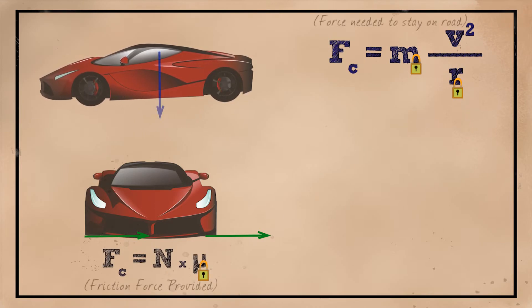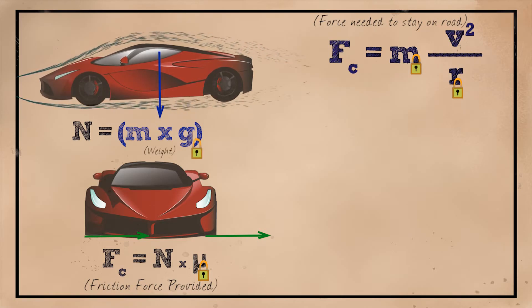However, when we go faster, we need more centripetal force to stay on the road, and from the friction equation, it seems that the only thing we can increase is the normal force, since we don't have much control over the friction coefficient.